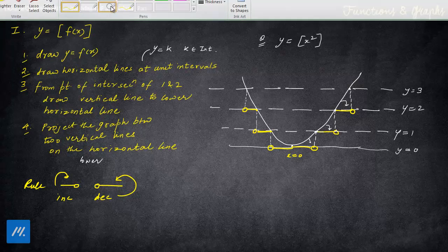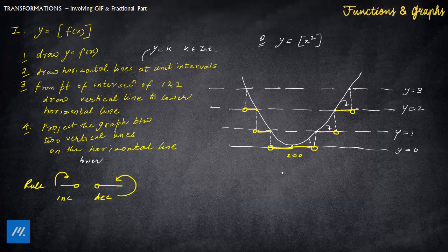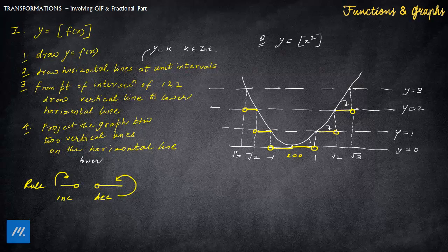Now you should also calculate the key points. Since y = 1, x² = 1 gives x = 1. The next point is x = √2. This particular point is x = √3. Similarly, on the negative side, this is x = −1, this point is x = −√2, and this point is x = −√3. I hope the basics of this particular property are clear.